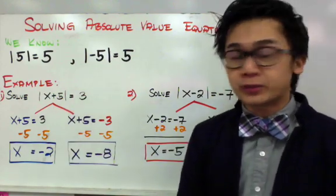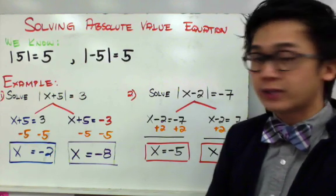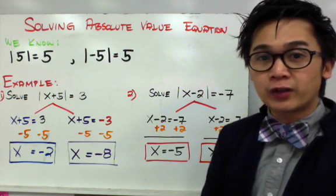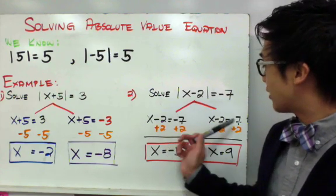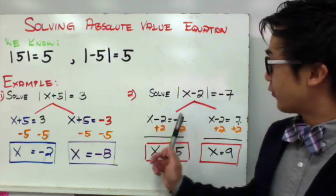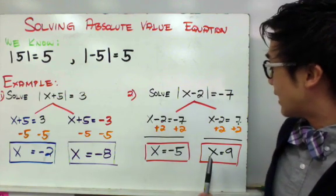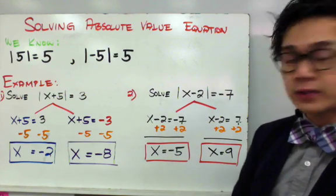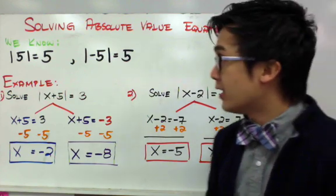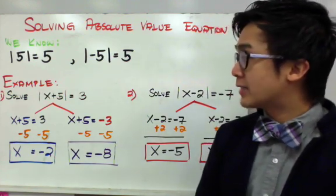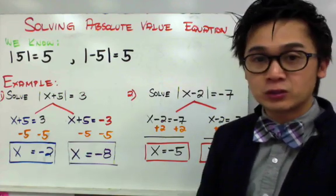Moving on to number 2: if we have the absolute value of x minus 2 equal to negative 7 and need to solve for x, we split it into 2 — one for negative 7 and the other for positive 7. For the first set, x equals negative 5, and for the second set, x equals positive 9. We'll always have two values of x when solving an absolute value equation.